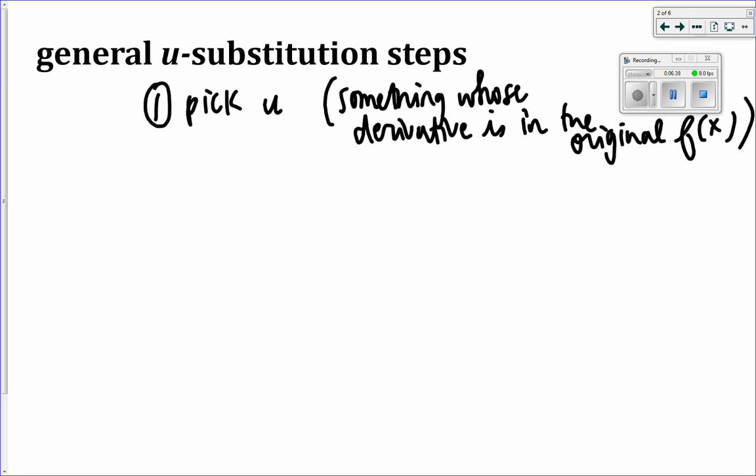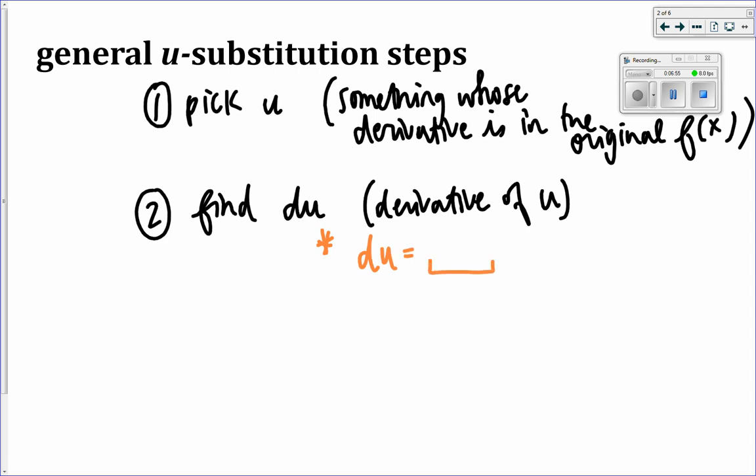Typically, generally, we want to pick something whose derivative is in the original function. We'll get back to that in a moment. Step two, then, would be to find du, or the derivative of u. But this is with respect to x. So you should have du is equal to whatever that derivative is, times dx. Step three, solve for dx.